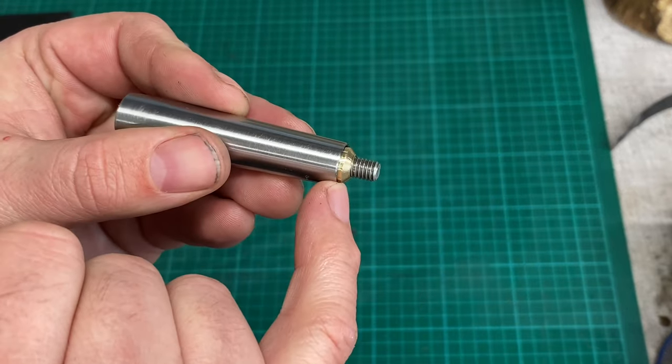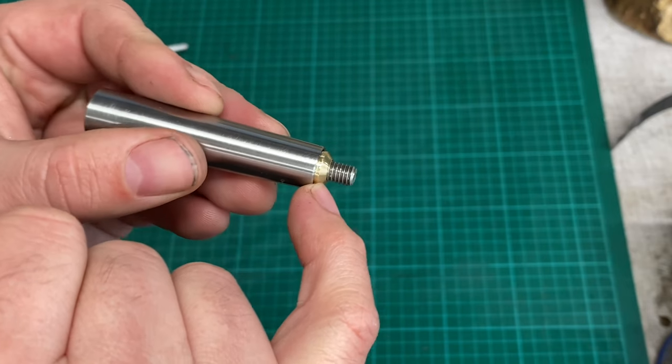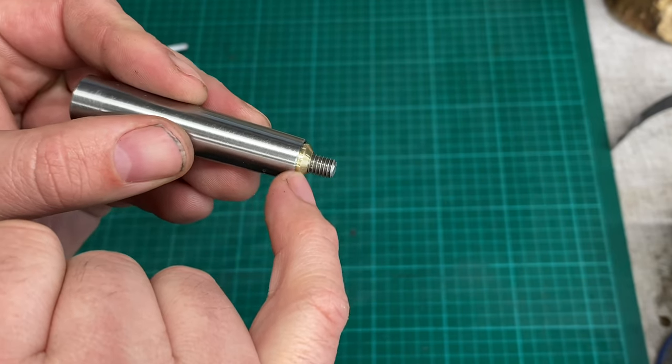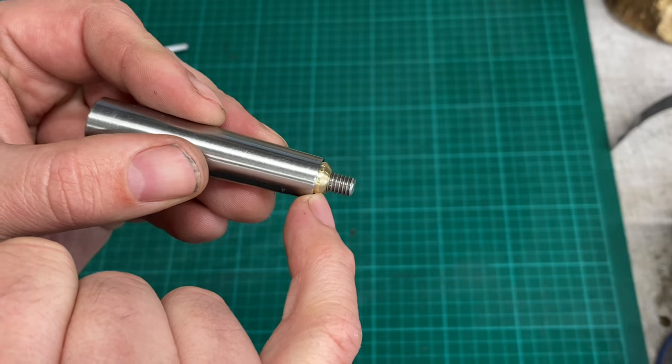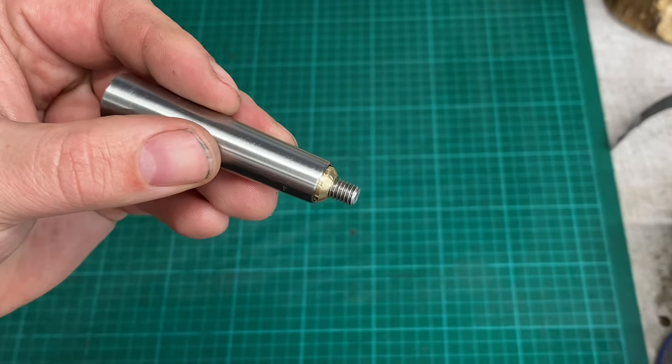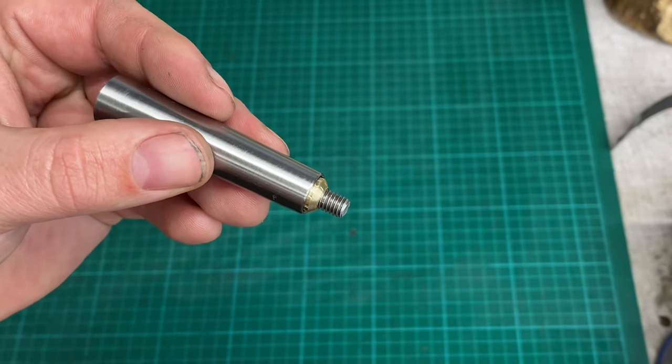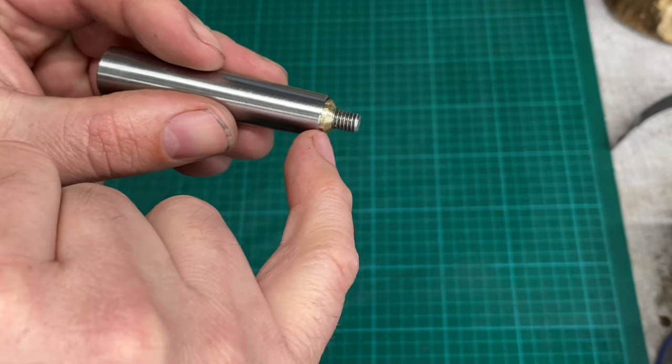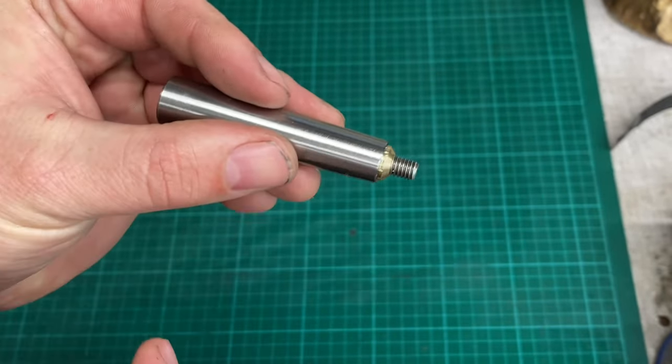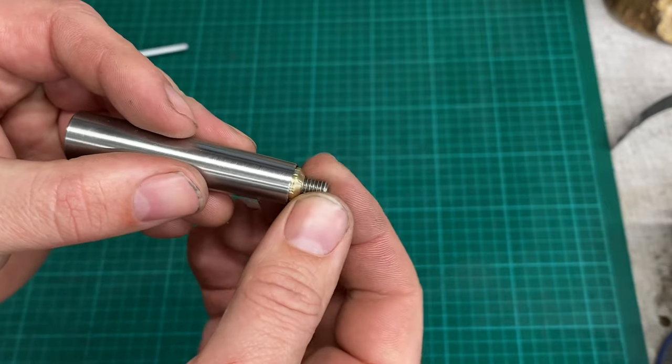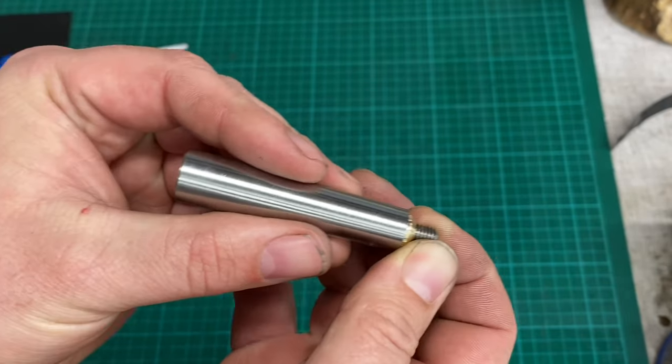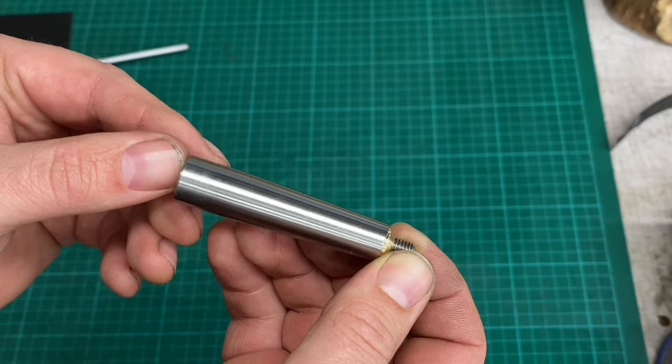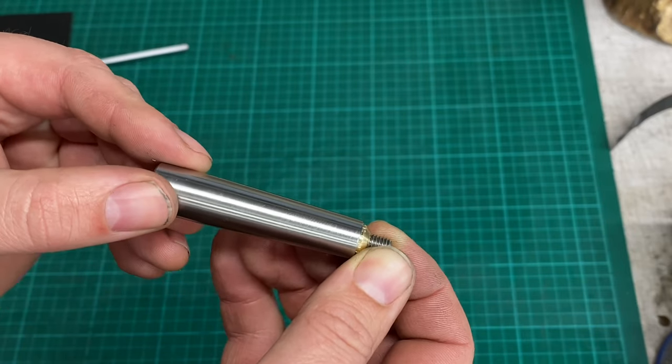You'll notice that on the end here there's a little conical section on this little brass insert. The reason for the conical section is the threads are quite loose and there's quite a big chamfer on the hole, on the threaded hole in the hand wheel. So that little cone engages into there and it's something for the shoulder to pull up against when you screw it in nice and tight and it's held nice and solidly there.